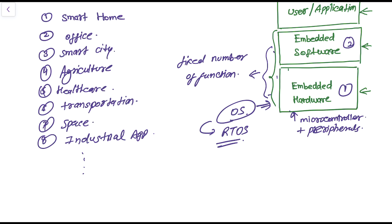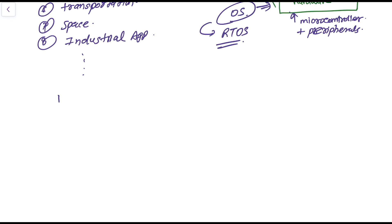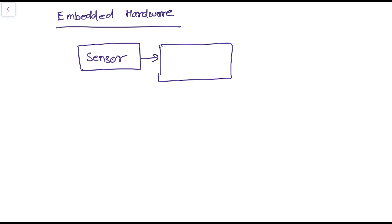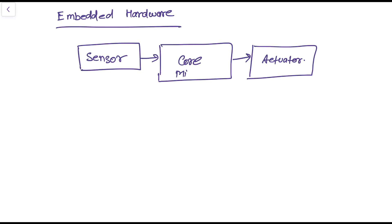Now let's learn about embedded hardware. Embedded hardware contains four basic units: a core processor, input, memory, and output. In a block diagram of an embedded system, there is a sensor feeding into the main embedded system core, and then finally an actuator. The core of any embedded system is the microcontroller itself.